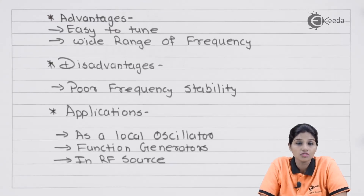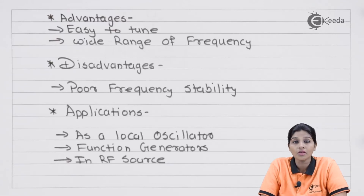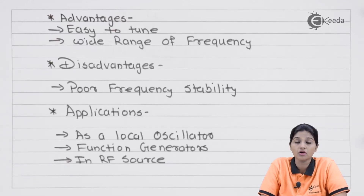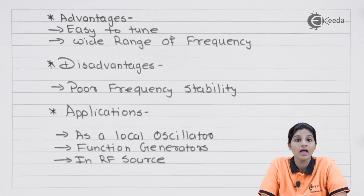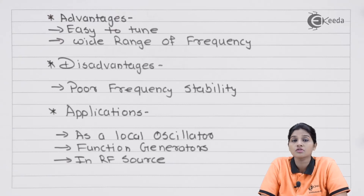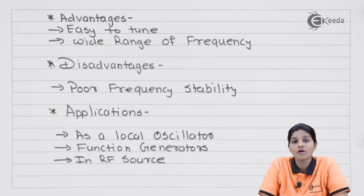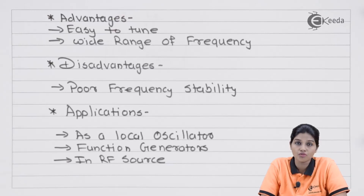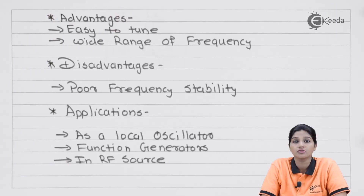So this is what the Hartley oscillator using op-amp is about: a combination of inductor and capacitor is used as a feedback network, which introduces a phase shift of 180 degrees, and the inverting amplifier configuration of the op-amp introduces a phase shift of 180 degrees. I hope you understood the topic of Hartley oscillator using op-amp. Thank you very much for watching this video — stay tuned and subscribe.